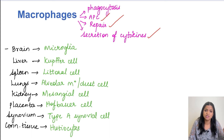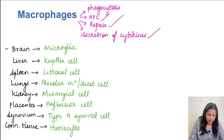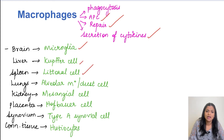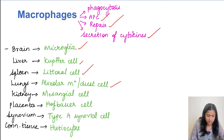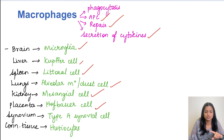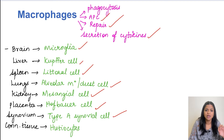In specific tissues, macrophages are given specific names. In the brain they are called microglia, in the liver Kupffer cells, in the spleen littoral cells, in the lungs alveolar macrophages or dust cells, in the kidney mesangial cells, in the placenta Hofbauer cells, in synovium type A synovial cells, and in connective tissue they are called histiocytes.